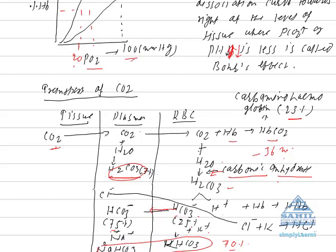Due to diffusion of bicarbonate ions from RBCs to plasma, the ionic equilibrium of RBCs and plasma is disturbed. To maintain ionic equilibrium, chloride ions shift from plasma to RBCs. This is called the chloride shift, or after the name of its discoverer, it is also called the Hamburger shift.